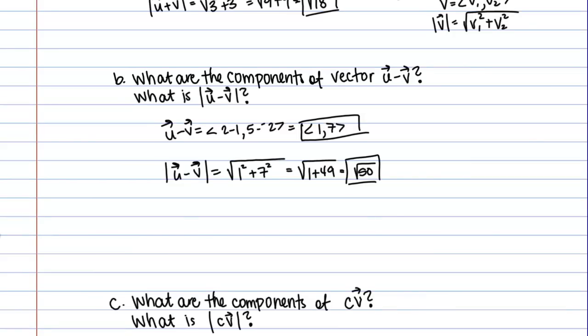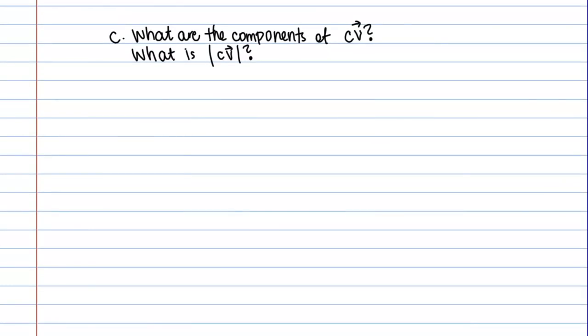You could graph this as well, and it should agree, but for the sake of time, we won't look at that specifically here. Instead, we'll move on to part C, which is scalar multiplication by components. This is asking what are the components of C times the vector V? This is what we call scalar multiplication. We're taking the vector V and multiplying it by a scalar or a constant.